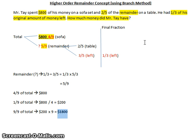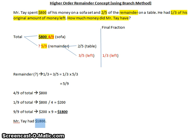And there you have it — Mr. Tay has $1,800. This is the higher order remainder concept using the branch method. I hope it helps. That's all for today, thank you, bye.